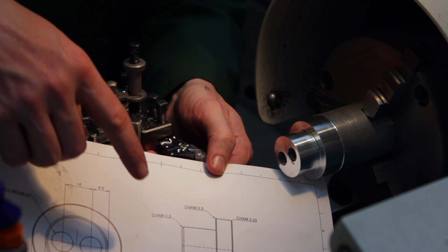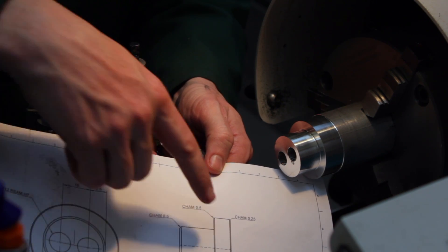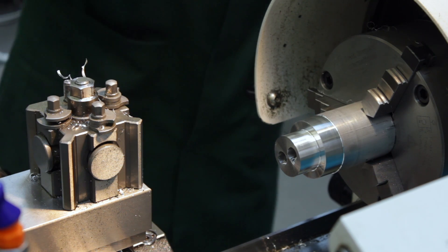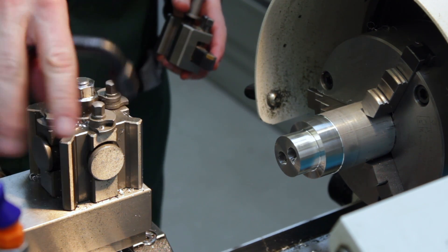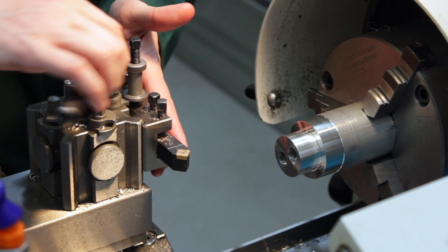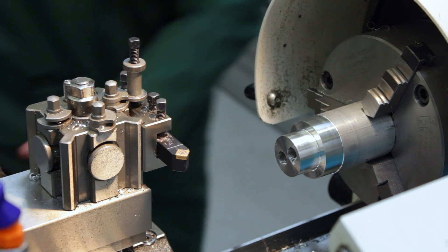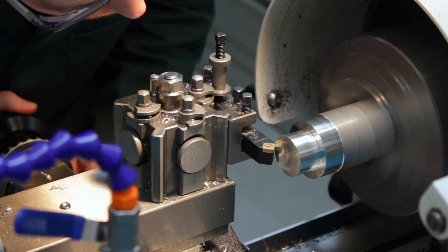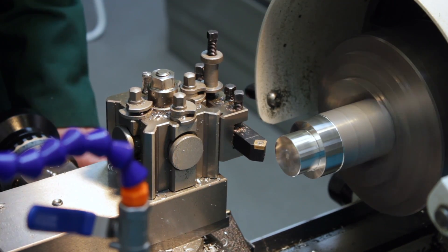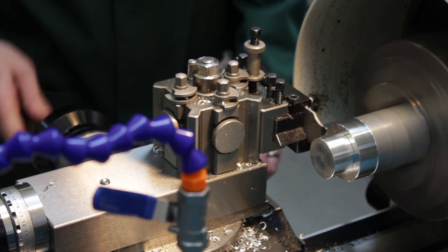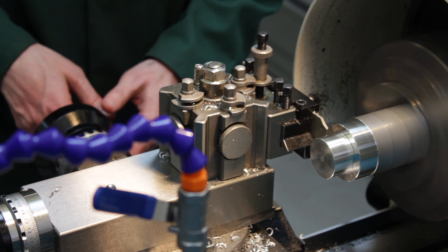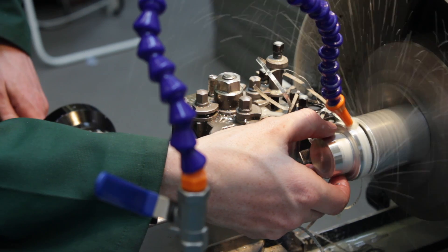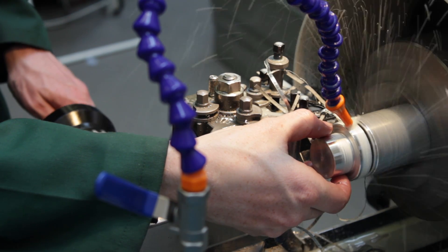So now we just need to put these chamfers 0.5 by 0.5, then we'll have to part before we do the 0.25 back chamfer.